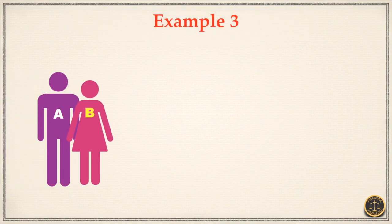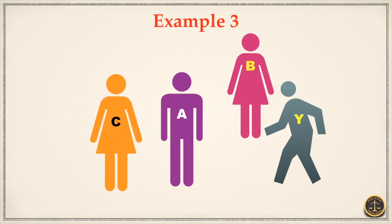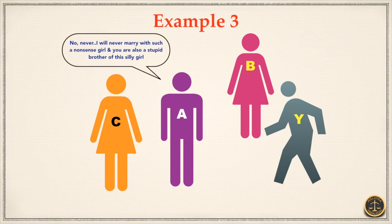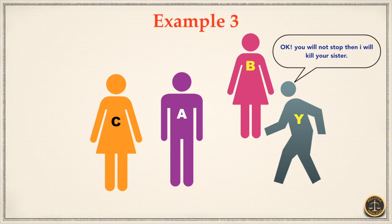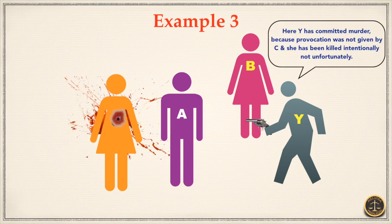Let's check out Example 3. Mr. A was in love with Miss G, who is the sister of Y. Y came to know about it and met with A. Y asked A, 'Will you marry my sister?' A refused and also abused Y and his sister both badly. Y lost his control because of A's grave and sudden provocation. Y intentionally kills C, A's sister. According to Exception 1, Y has committed murder, inasmuch as the provocation was not given by C and the death of C was not caused by an accident or misfortune in doing an act caused by the provocation.